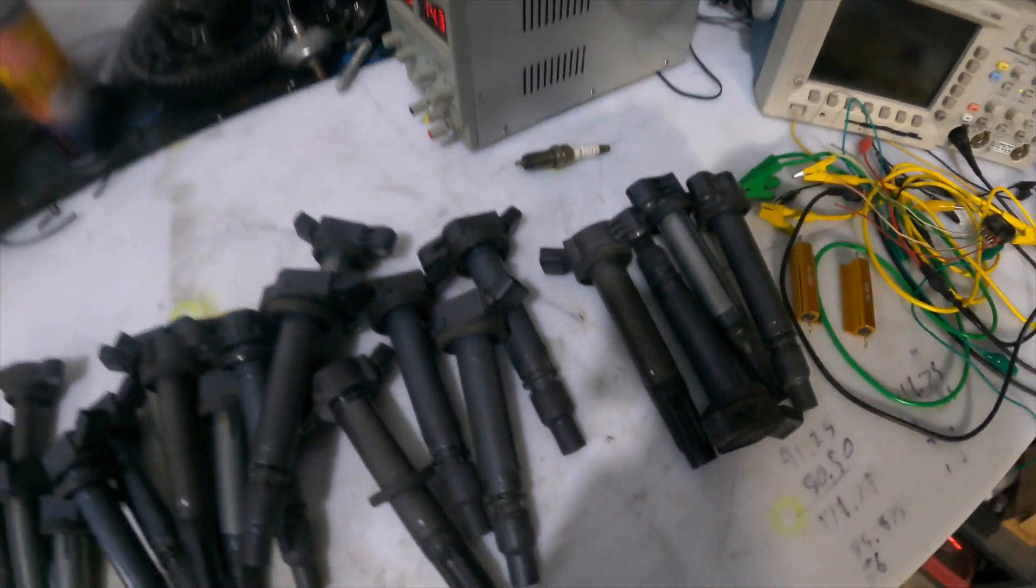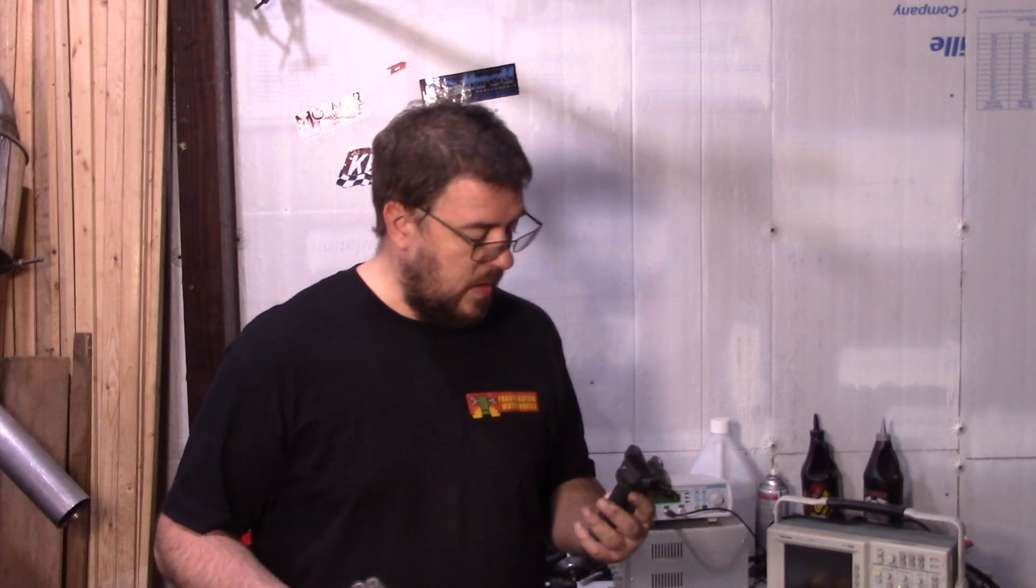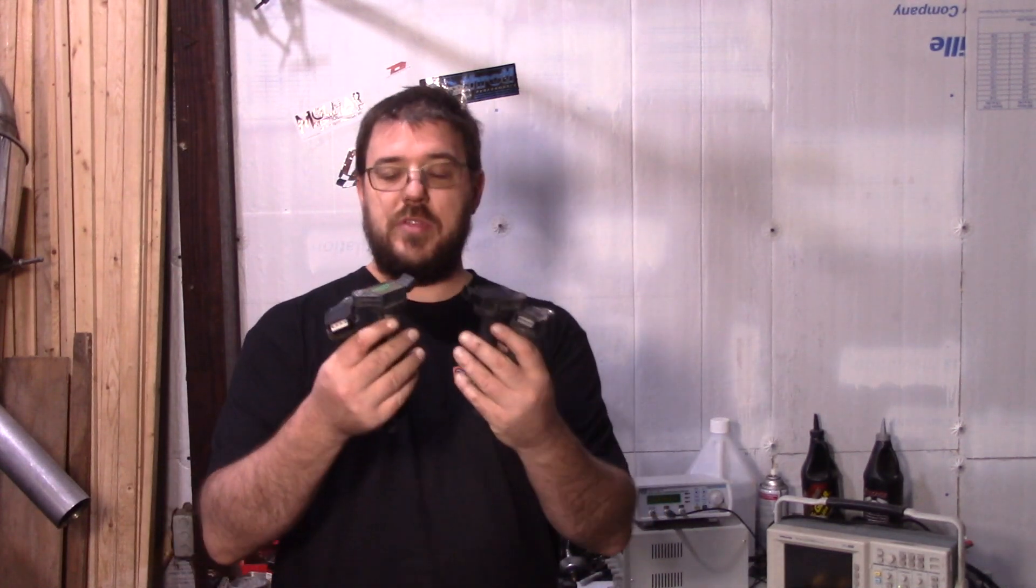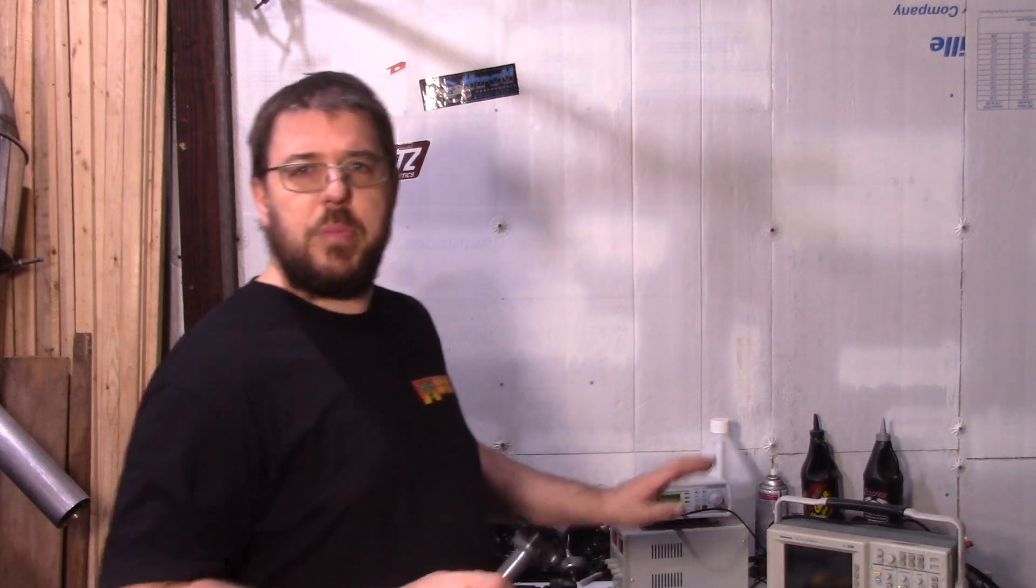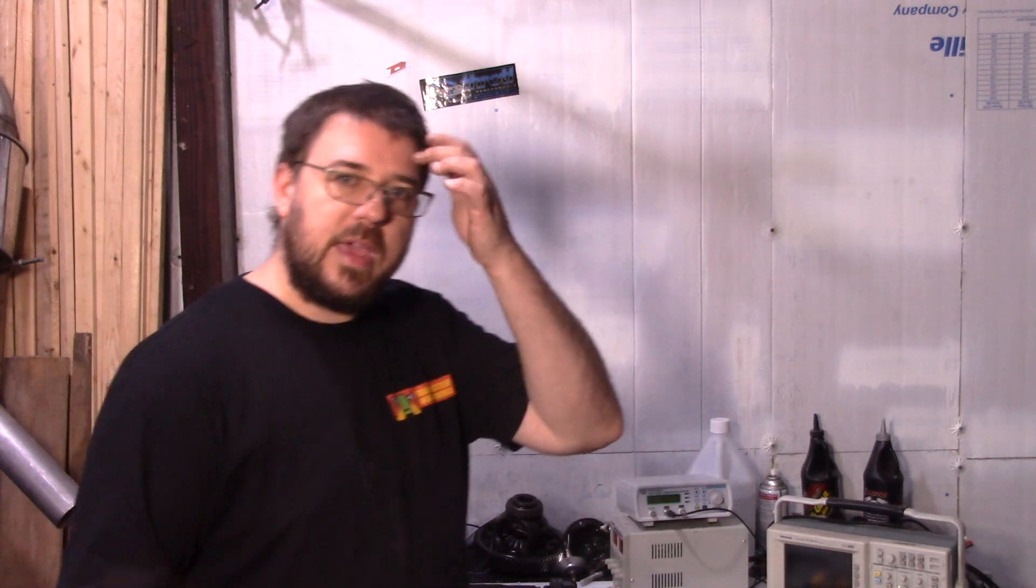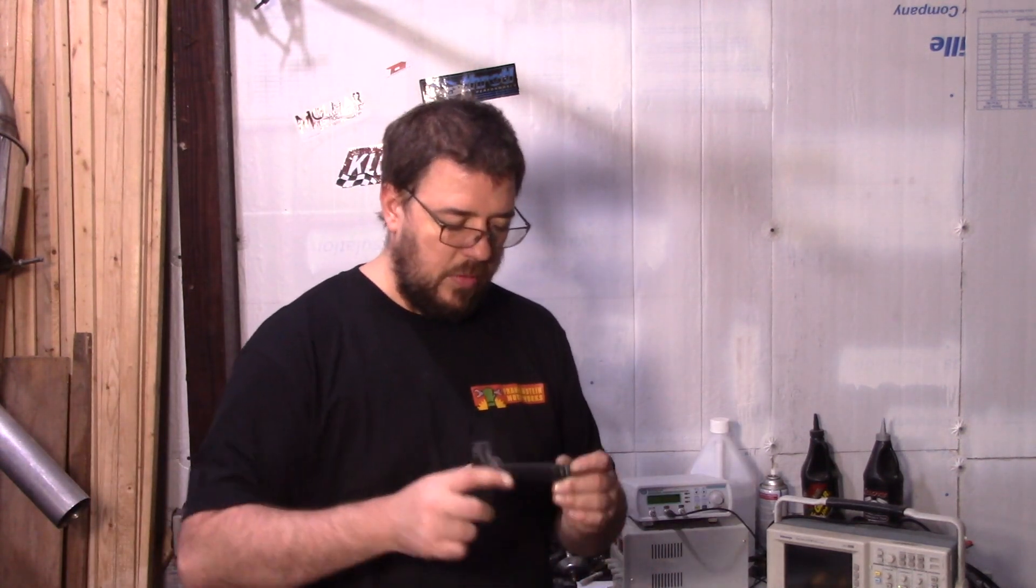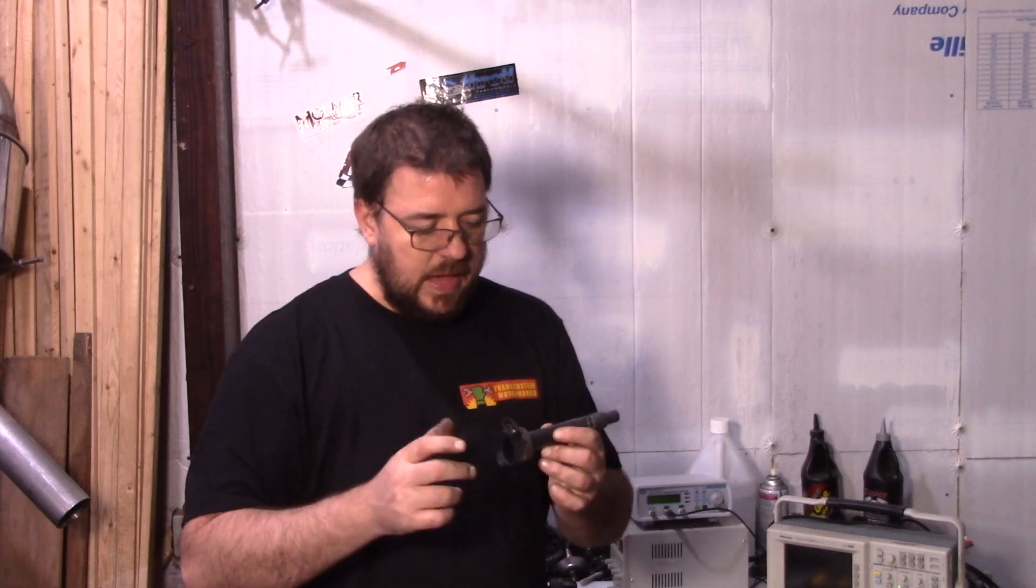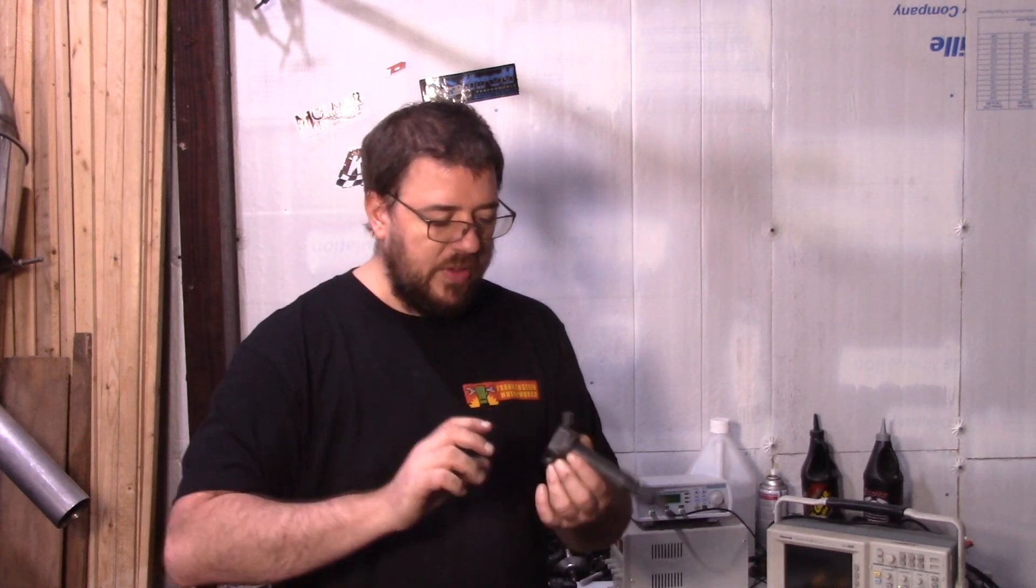I bet you can't guess what we're working with today. Well, I dug through the shop and out of all those ignition coils I found four unique part numbers. What I want to look at today with this temporary setup is to characterize the ignition coil. We're going to take one of these at random, power it, and see what effect the charge time has on the output.